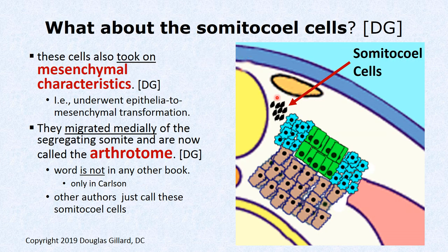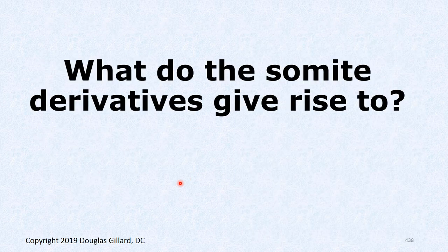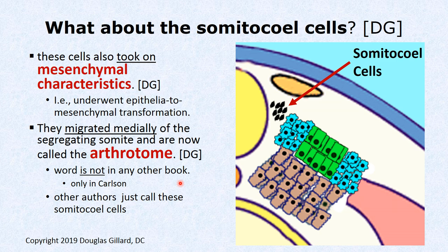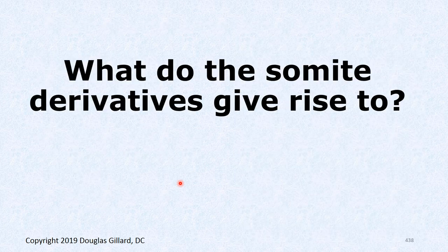Now let's address the somitocele cells that migrated. They took on mesenchymal characteristics and migrated next to the neural tube. Carlson calls this region the arthrotome; other books just call them somitocele cells. The arthrotome gives rise to the intervertebral discs and the articular cartilaginous surfaces of the facet joints.